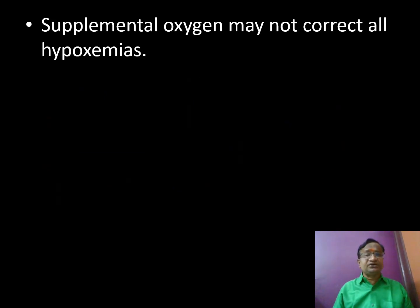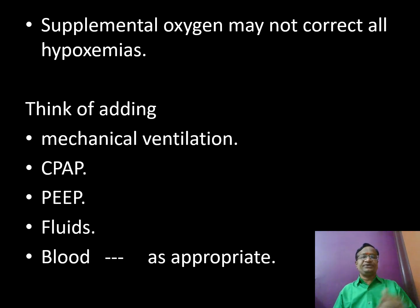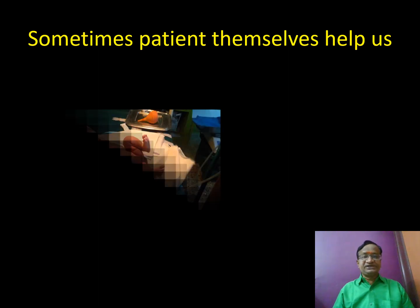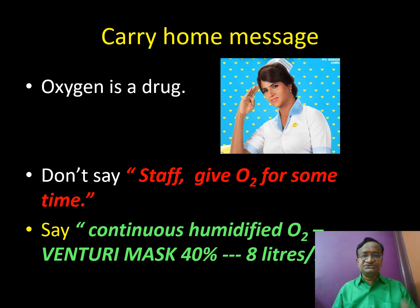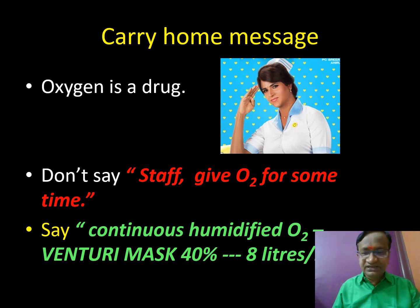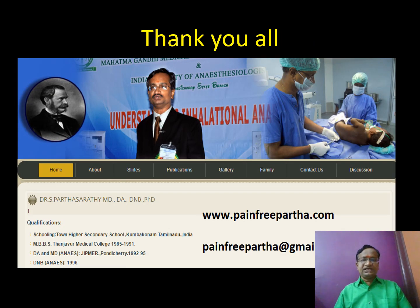Supplemental oxygen may not correct all hypoxemia — we may need mechanical ventilation, CPAP, blood transfusion, or IV fluids as appropriate. Oxygen is a drug — prescribe it properly: document it on the case sheet. Examples: continuous humidified Venturi 40% at 8 L/min, or nasal prongs unhumidified at 2 L/min. All slides are available at www.paintfreepartha.com.